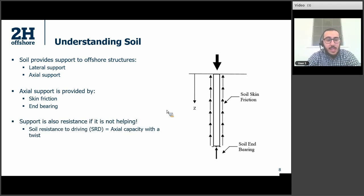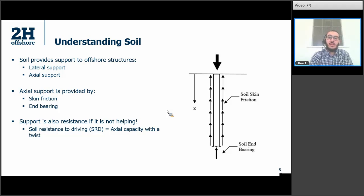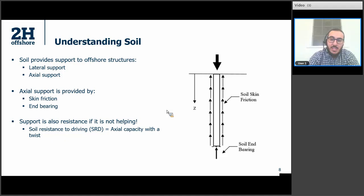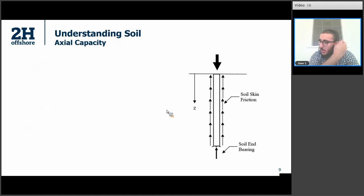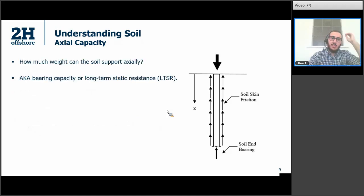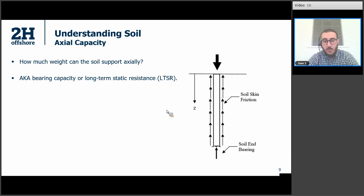This support is resistance — if it's not helping and working against us, that is really what soil resistance to driving is. As we attempt to install the pipe, soil resistance to driving is working against us. It's really the axial capacity of the soil, but with a small twist. Axial capacity is how much weight the soil can support axially — also known as bearing capacity or long-term static resistance. This drives the length and target depth for axially loaded structures.